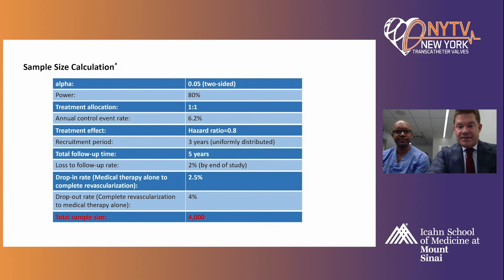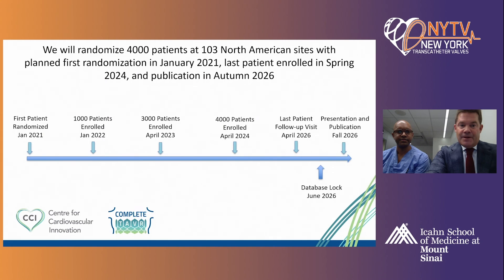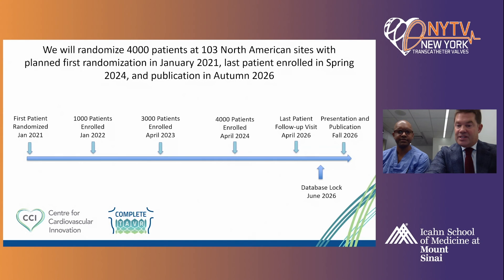The sample size is approximately 4,060 patients. We plan to randomize starting January 2021, with the last patient enrolled in April 2024, follow-up complete April 2026 with database lock. We actually hope to randomize the first patients in Vancouver in December — remarkable that all of this has come together during the pandemic.